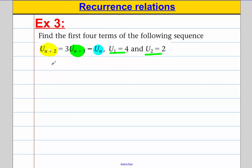So, we have u1 is equal to 4. We have u2 is equal to 2. Now, let's think about this. u3, this is three times the one just before it. So three times u2, take away the one two before it. So take away u1.